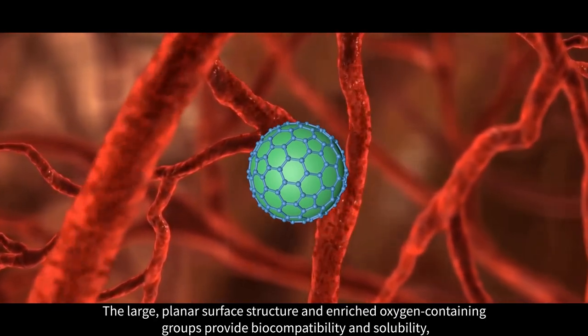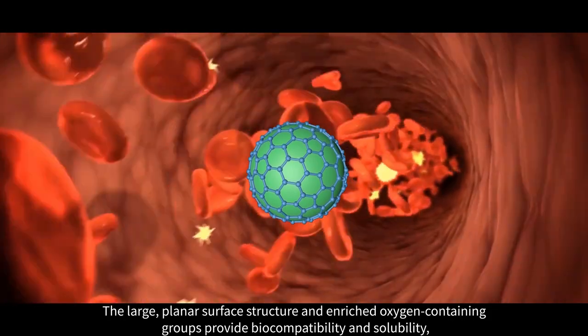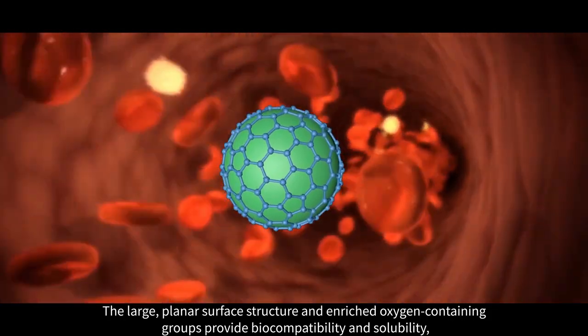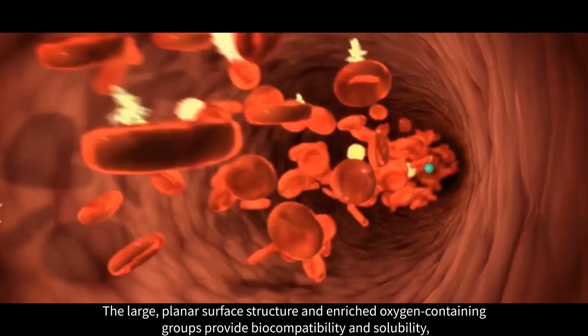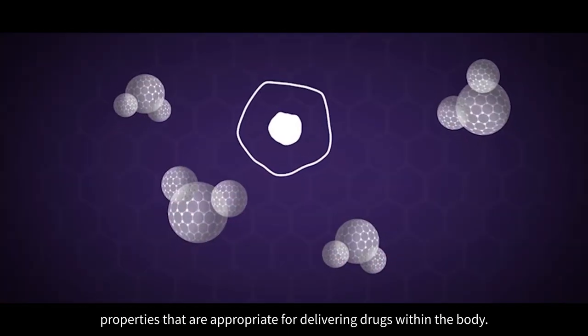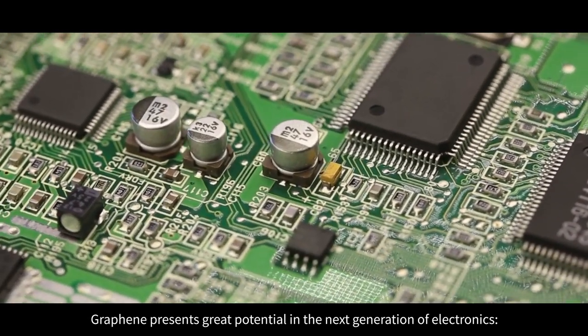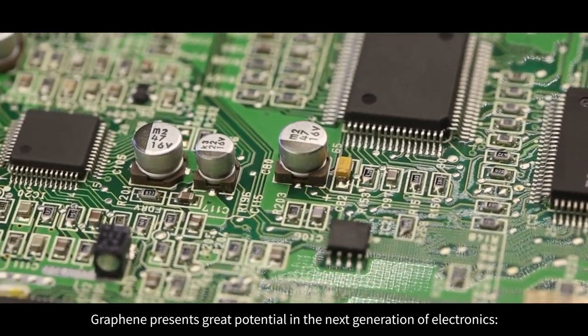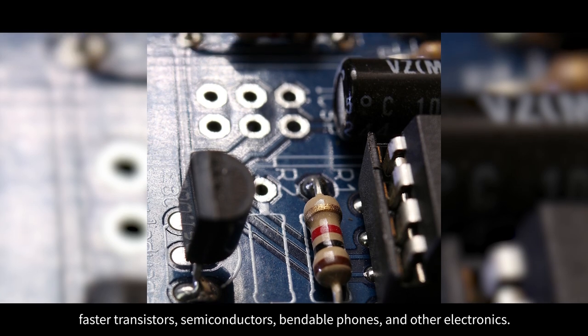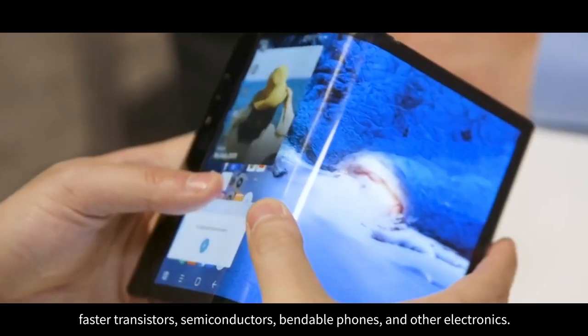For instance, graphene oxide produced by vigorous oxidation of graphite is an ideal nanocarrier for efficient drug and gene delivery. The large planar surface structure and enriched oxygen-containing groups provide biocompatibility and solubility properties that are appropriate for delivering drugs within the body.